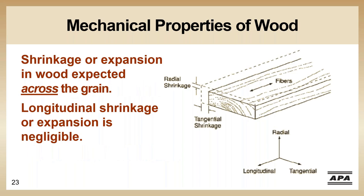When wood decreases in moisture content, the walls of the tubular-shaped wood cells shrink, causing the wood to decrease in dimension in both thickness and width. In wood science vernacular, shrinkage that occurs perpendicular to the growth rings is called radial shrinkage. Shrinkage parallel or tangent to the growth rings is tangential shrinkage. Tangential shrinkage averages about twice that of radial shrinkage in most species. Shrinkage in the length of the wood — longitudinal shrinkage — is negligible. In most construction lumber, the growth rings are parallel to the wide face, which explains why solid sawn lumber floor joists generally shrink in depth as they dry to a stable moisture content.